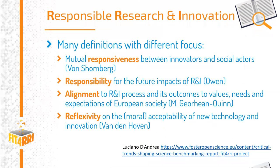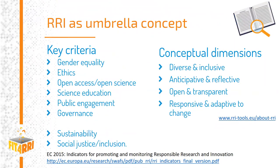More practically, RRI can be seen as an umbrella concept that includes different key criteria and conceptual dimensions. Key criteria include gender equality, the ethical dimension of research process and content, open access to research results, formal and informal science education, public and societal engagement, and governance. More recently, sustainability and social justice or inclusion have also been added to this concept.